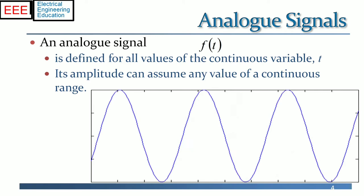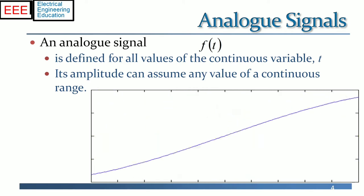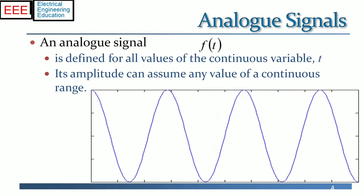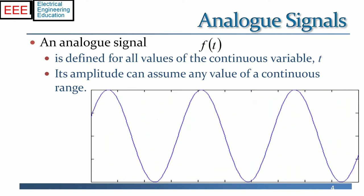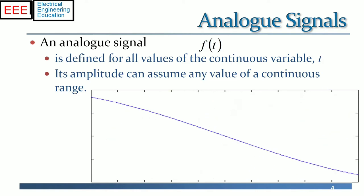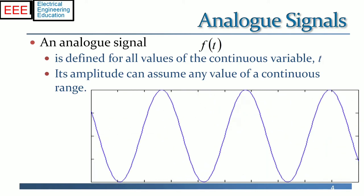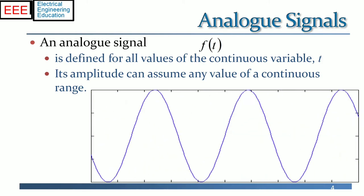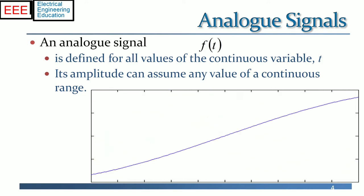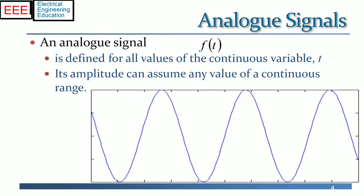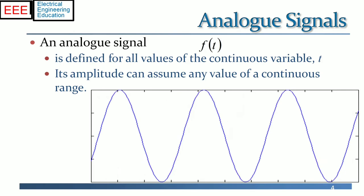Some property of the medium is used to convey the signal's information. For example, an aneroid barometer uses rotary position as the signal to convey pressure information. In an electrical system, the voltage, current, or frequency or phase of the signal may be varied to represent the information. Any information may be conveyed by an analog signal. Such a signal may be a measured response to changes in a physical variable such as sound, light, temperature, position, or pressure. The physical variable is converted to an analog signal by a transducer. For example, sound striking the diaphragm of a microphone induces corresponding fluctuations in the current produced by a coil in an electromagnetic microphone. The voltage or the current is said to be an analog of the sound.